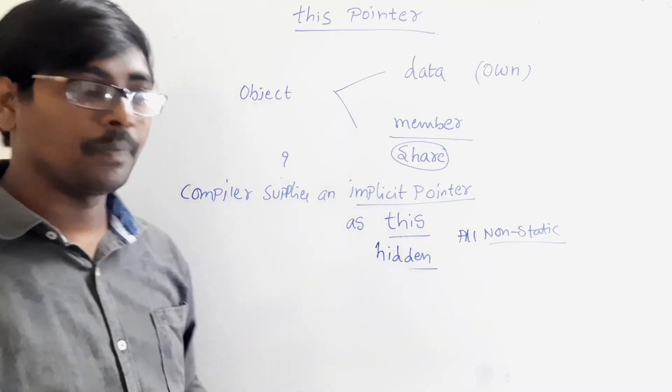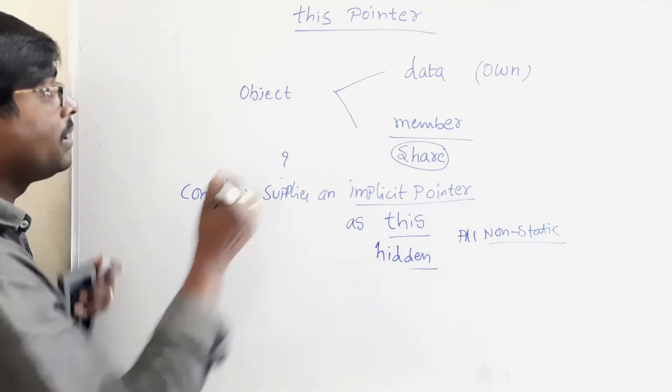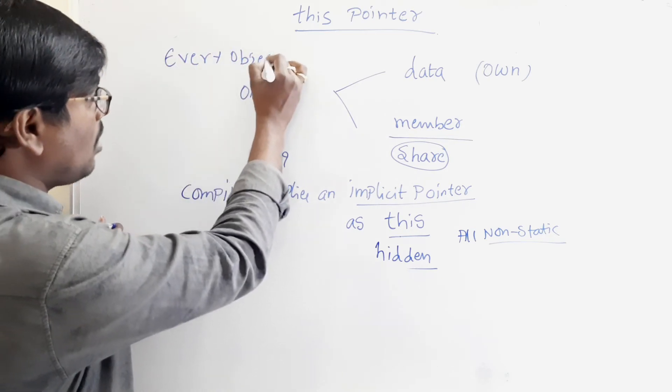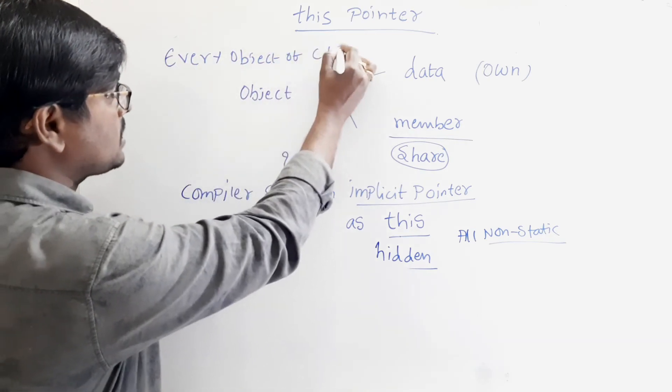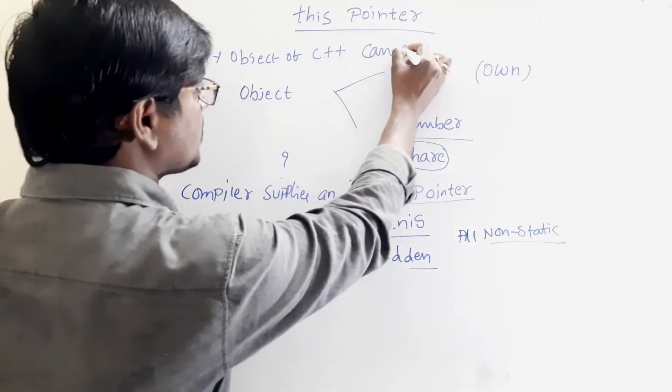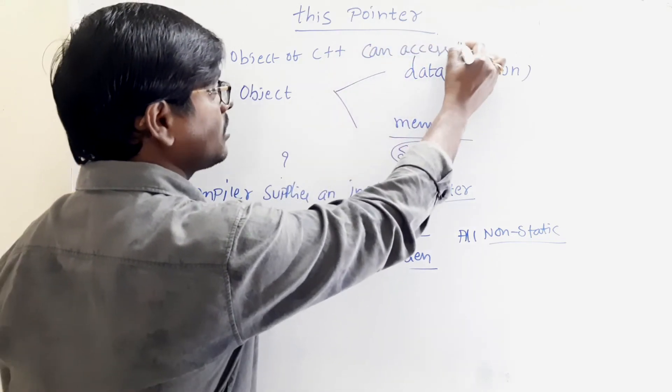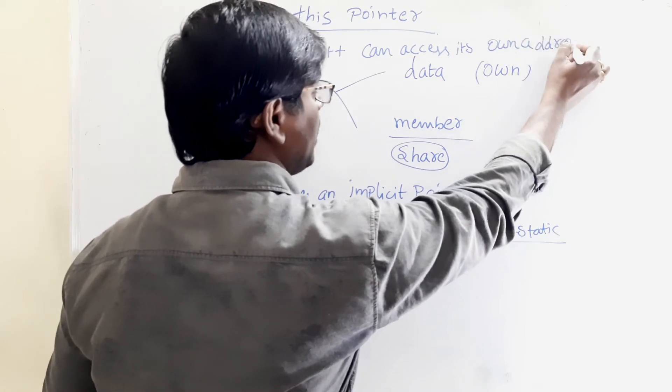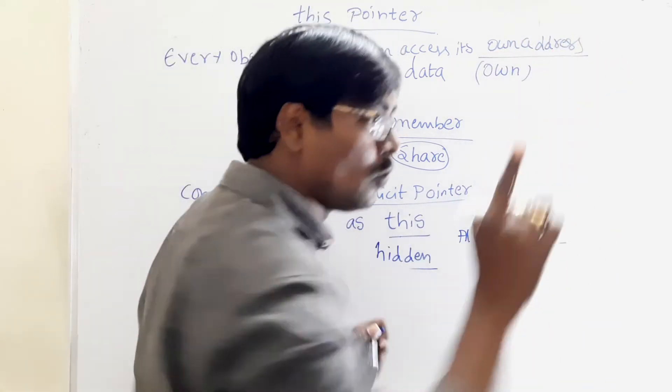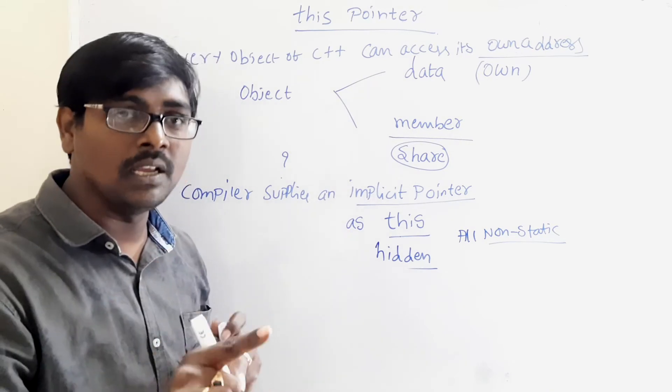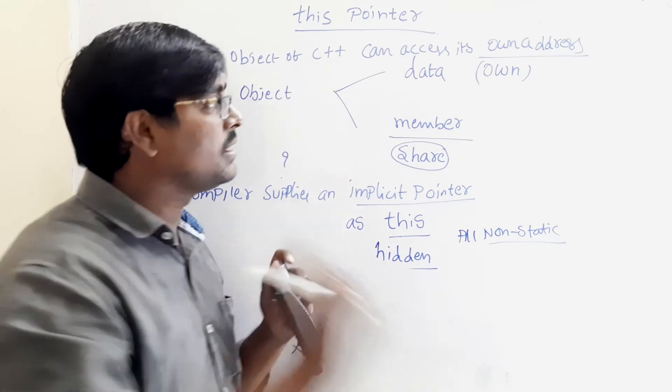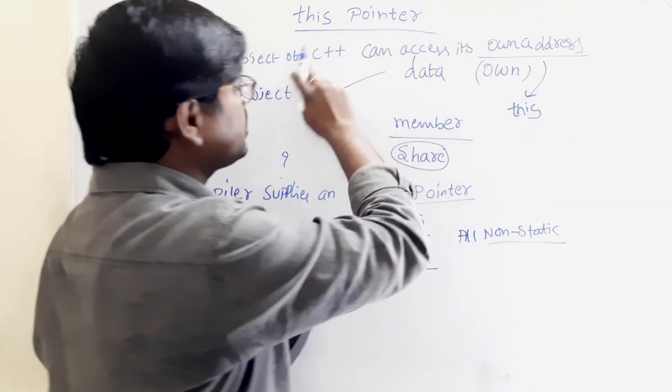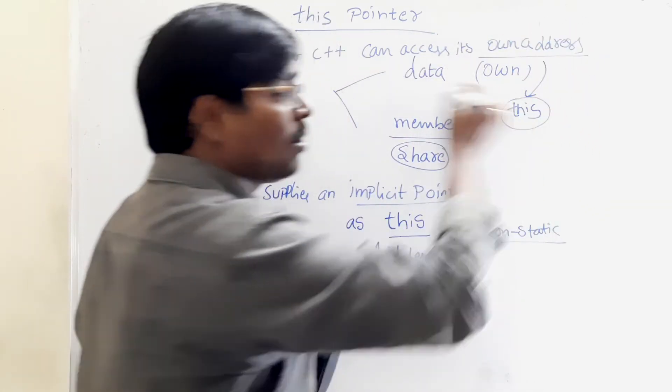Finally, a simple point is, every object of C++ can access its own address. Every object can access its own address by using a pointer called this pointer. Every object can access its own address by using this pointer.